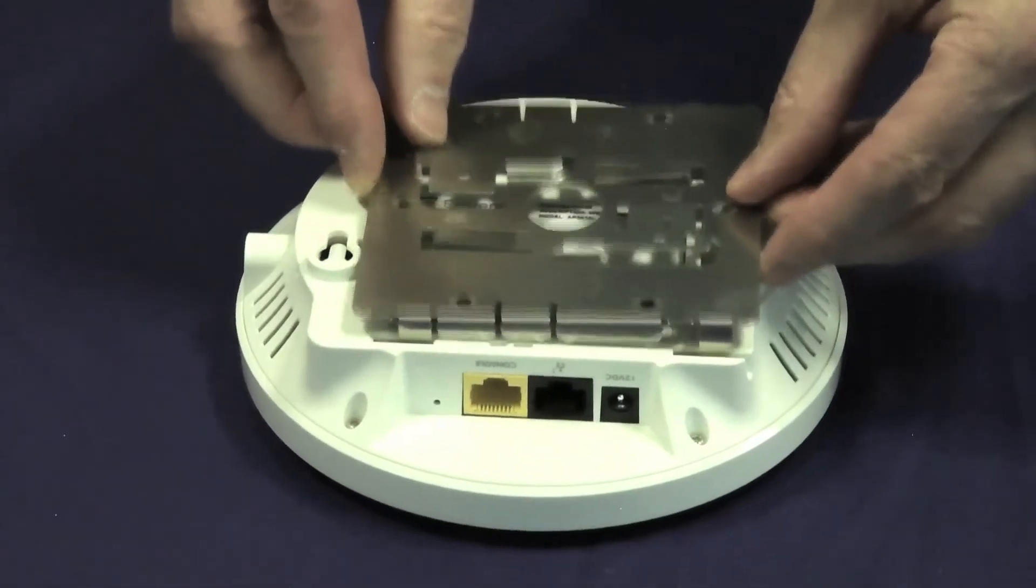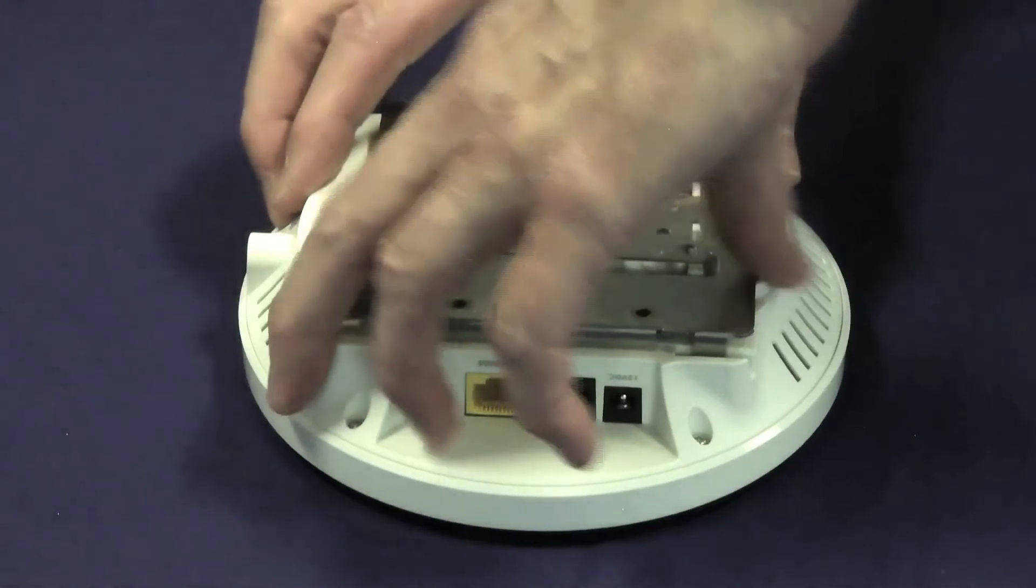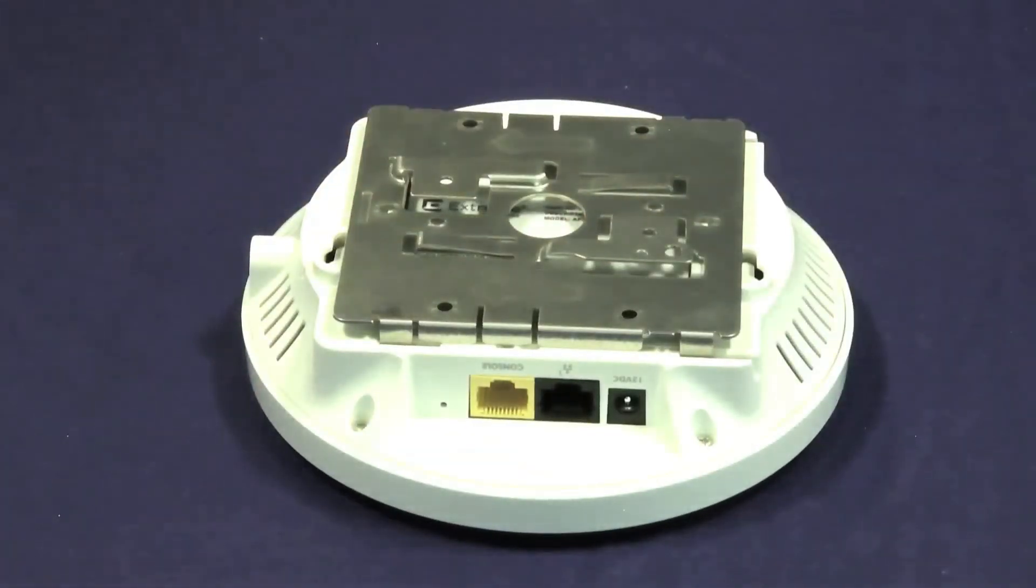The locking tab requires that a fair amount of force be used to make sure that the AP is adequately secured. This is also much easier when using an adapter than for a direct wall mount.